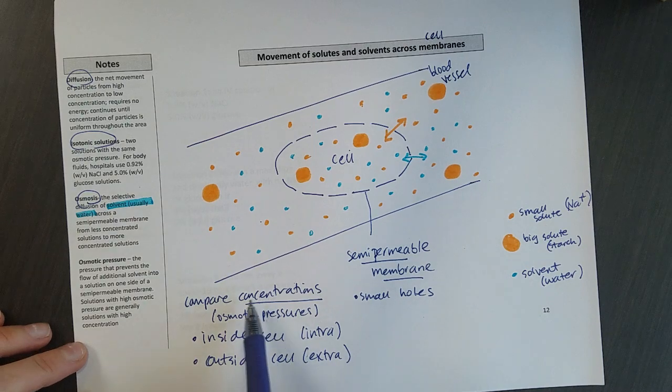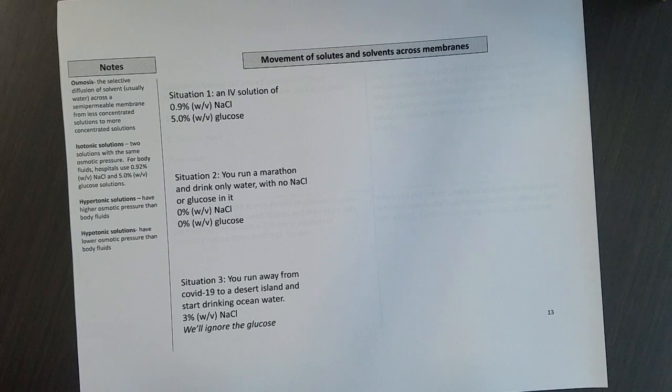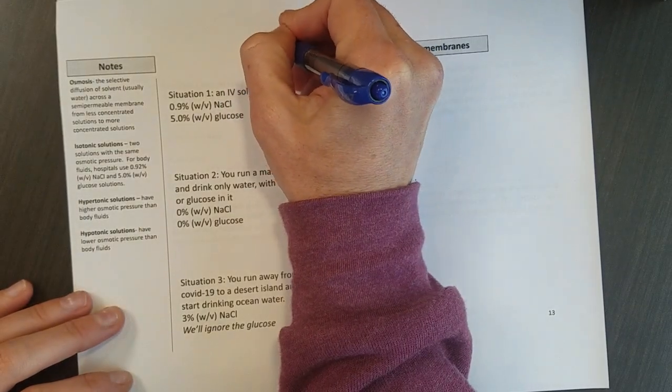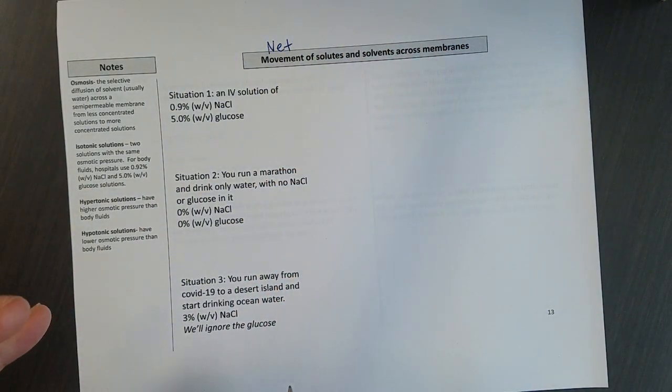So we've got basically three different comparisons of concentrations across membranes that we want to look at. And we're going to take a minute to sketch each of these out. You should be able to sketch these. You should also be able to recognize and predict what's happening. And as we're drawing some movement here, we're talking about the net movement. So overall, if I average out what happens over a period of time, this is the overall movement out or overall movement in.